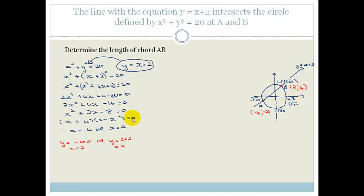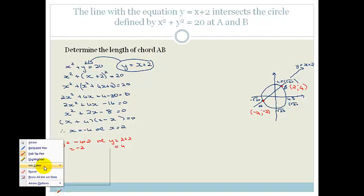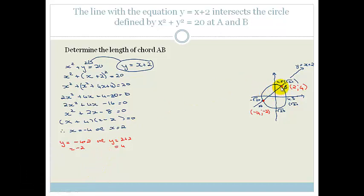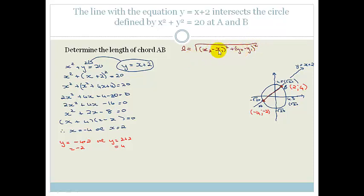Now it says determine the length of chord AB. Remember the length formula — all these formulas are on your formula sheet. Back in my school days, we had to learn all these formulas. The length formula is exactly the same as Pythagoras: length = √[(x₂ − x₁)² + (y₂ − y₁)²]. All we have to do is substitute these two points in to find the length.